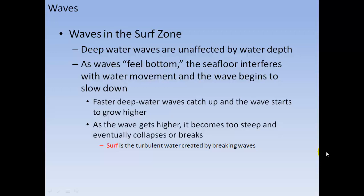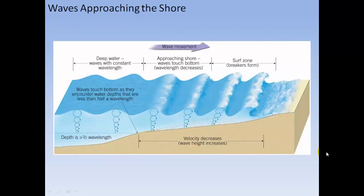Deep water waves are unaffected by water depth. As a wave feels the bottom at about half a wavelength, the seafloor interferes with water movement and the wave begins to slow down. A faster, deeper wave catches up and the wave starts to grow higher. As the wave gets higher, it becomes too steep and eventually collapses or breaks. Surf is the turbulent water created by breaking waves. Once the shoreline is felt at half a wavelength, the wave picks up in height until it collapses and breaks against the shore.